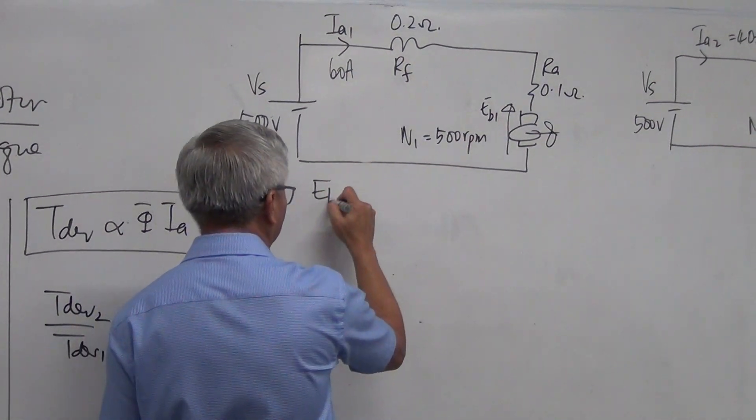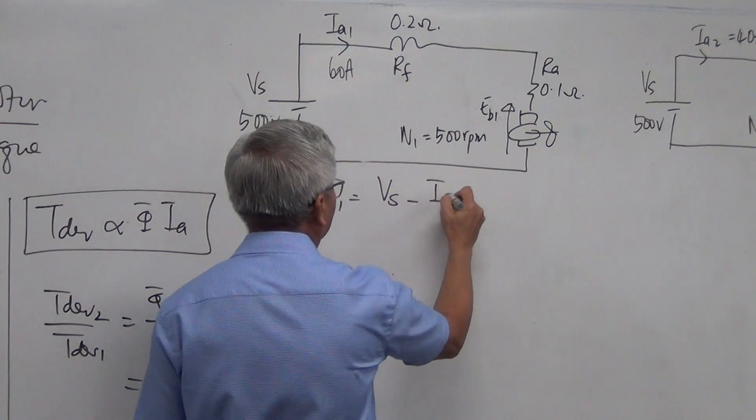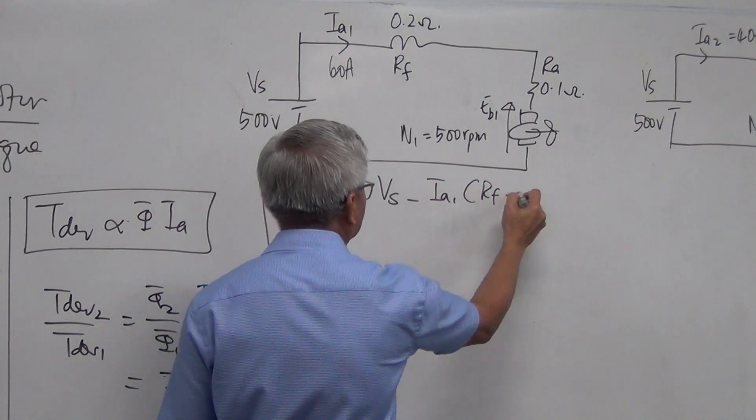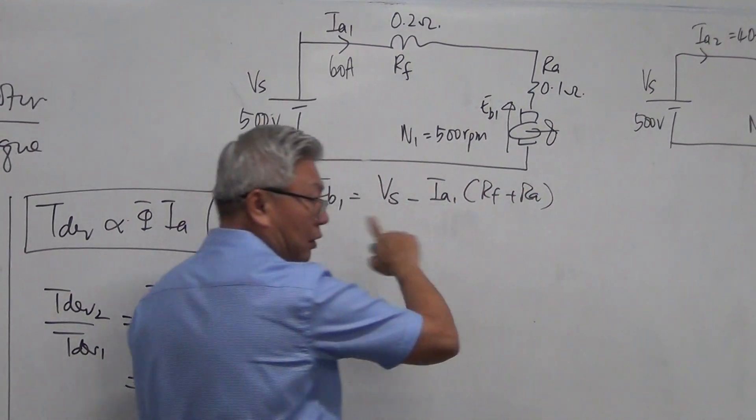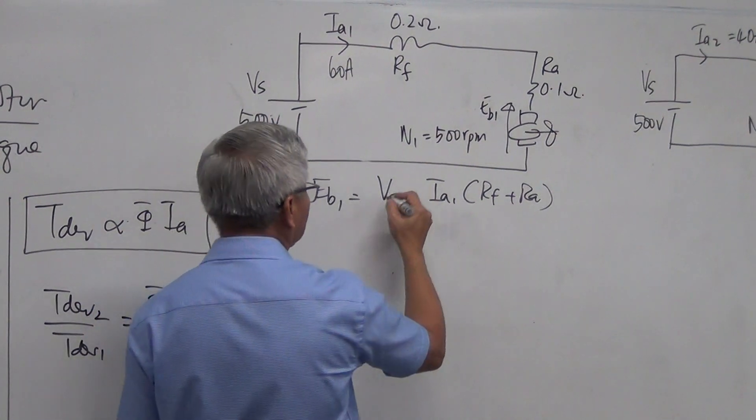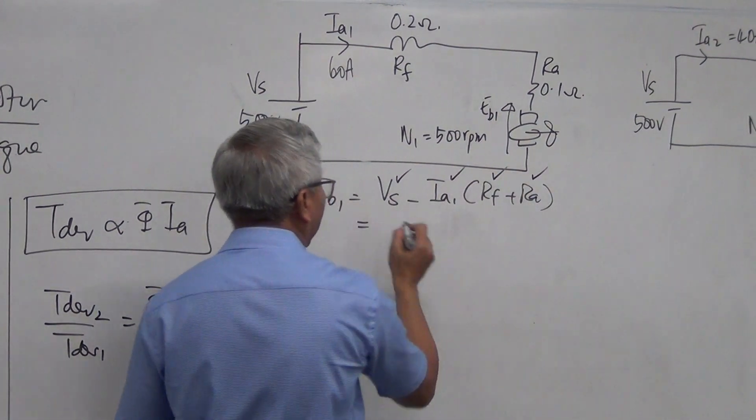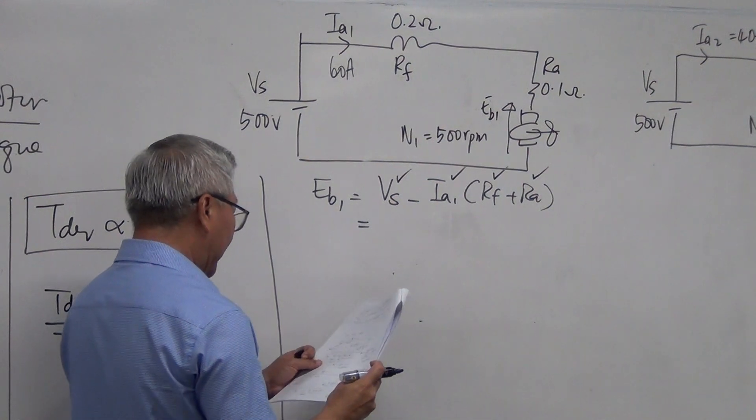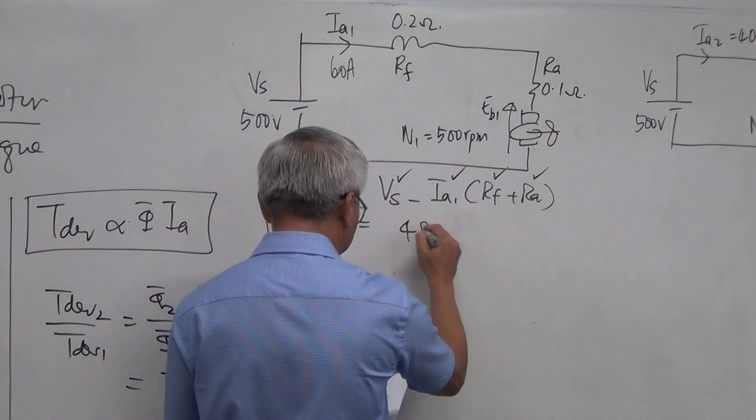So let's calculate EB1. EB1 is equal to VS minus IA1 times RF plus RA, series circuit by Kirchhoff's voltage law, and I know all these values. And I substitute the value, and I get the answer of 482 volts.